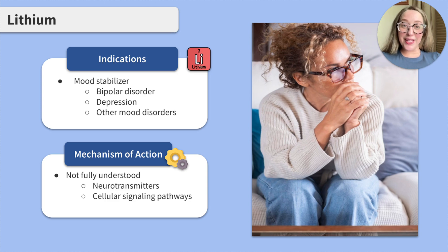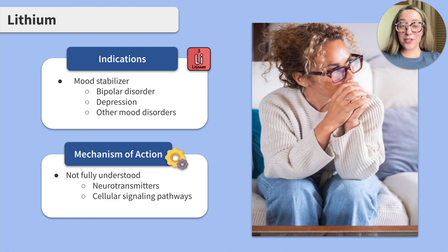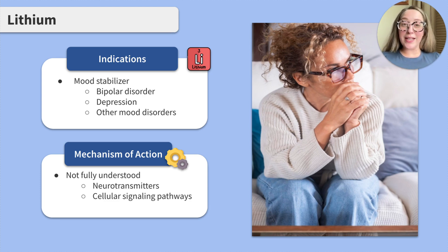Lithium is a medication primarily used in psychiatric settings as a mood stabilizer. Lithium is commonly prescribed to treat bipolar disorder but can be used to treat depression, schizoaffective disorder, and other mood disorders. Let's take a moment to break that down further to understand the mechanism of action within its use for each disorder.